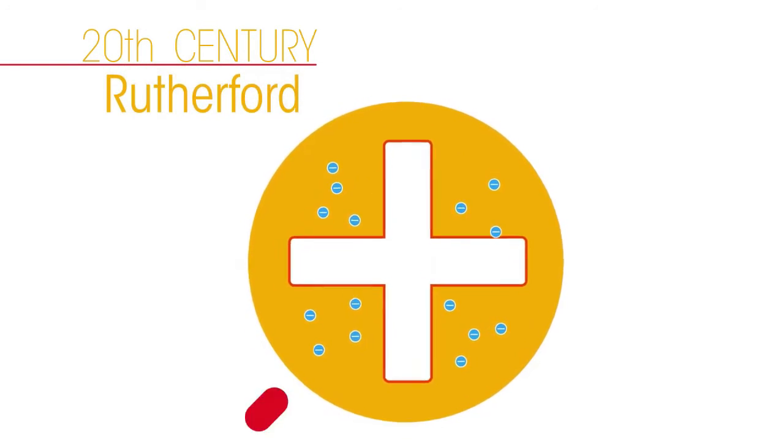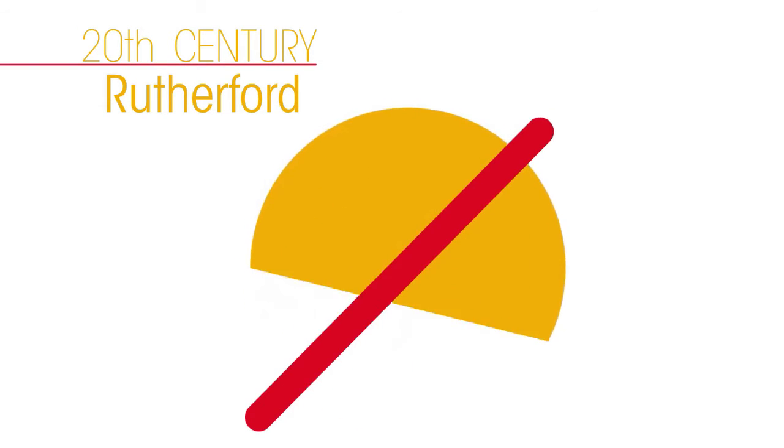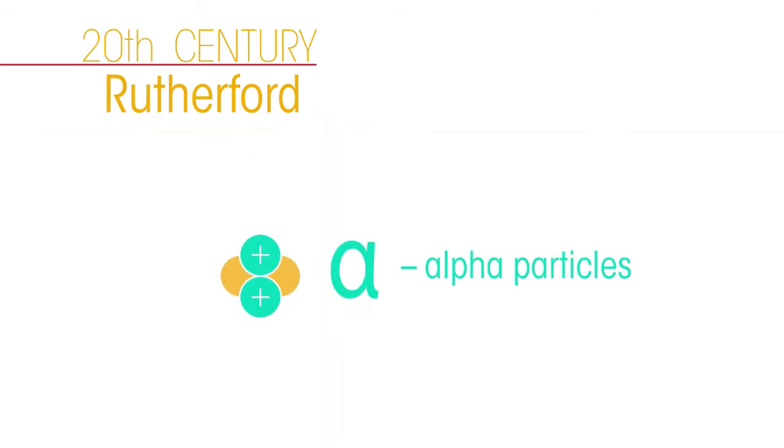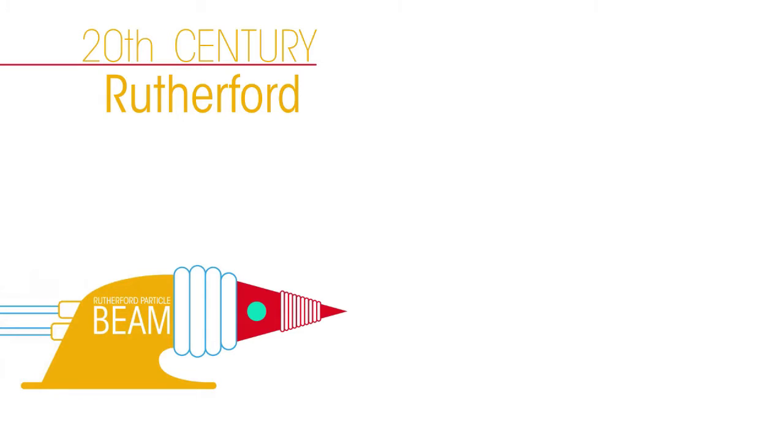Two of his assistants, called Geiger and Muller, carried out the study. They used alpha particles, which are very tiny positively charged particles. They aimed a beam of alpha particles at very thin gold foil.